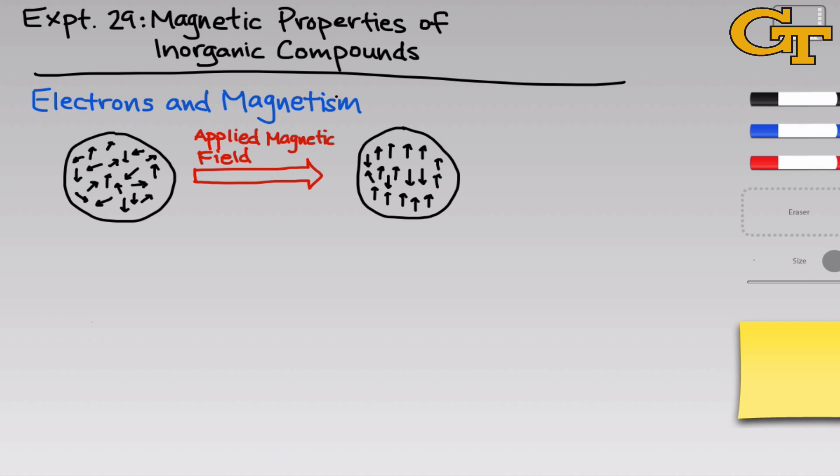If we imagine the field pointing straight up, you can see that most of the spins are aligned upwards, a few are aligned downwards, but there's a net alignment of the unpaired spins with the applied magnetic field. That creates magnetization. This material gets attracted to the source of the applied magnetic field. The extent of alignment that occurs is different for different materials.